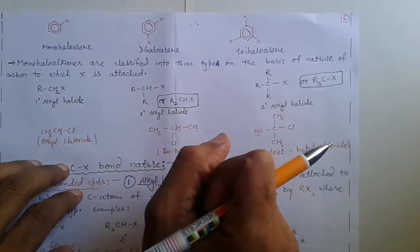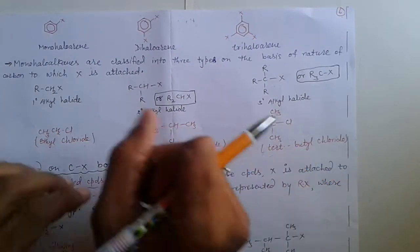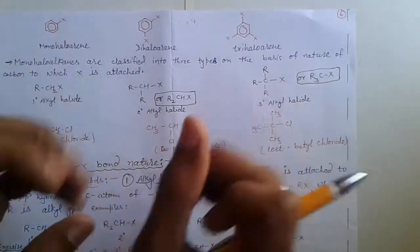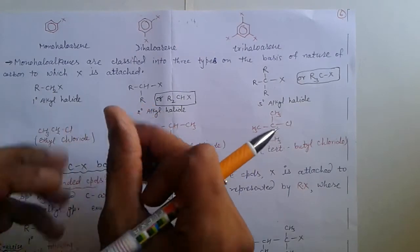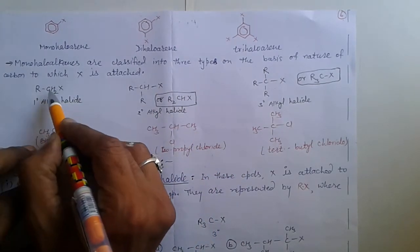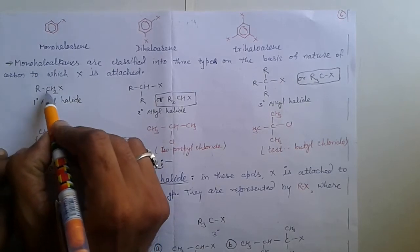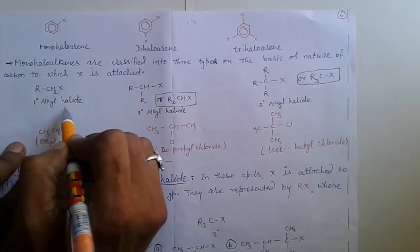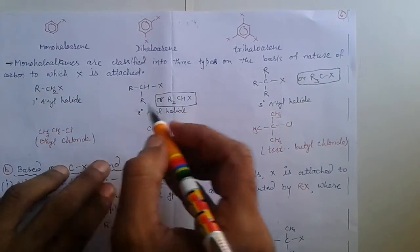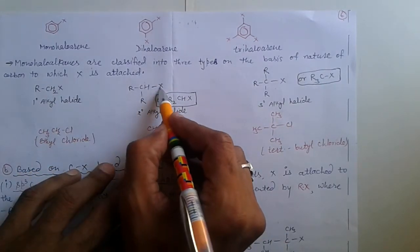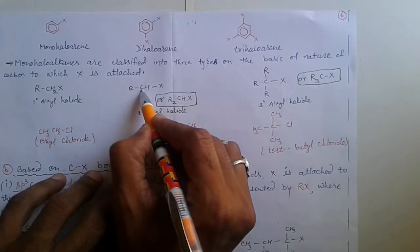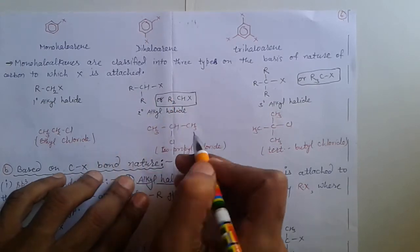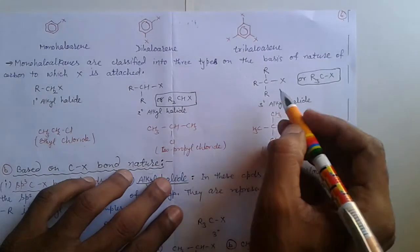Monohalo alkanes are classified into three types on the basis of the nature of the carbon to which halogen is attached: one degree, two degree, and three degree. In a one degree alkyl halide, halogen is attached to a carbon that is attached to one carbon in the carbon chain. In a two degree alkyl halide, halogen is attached to a carbon that is attached to two carbons.